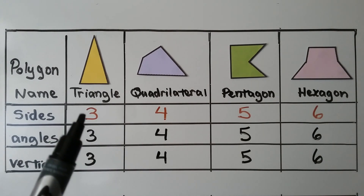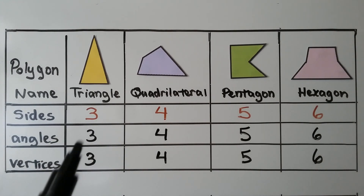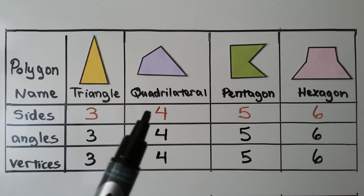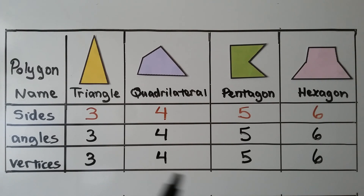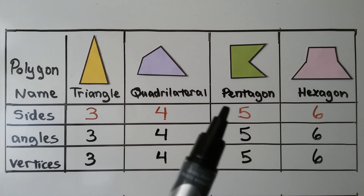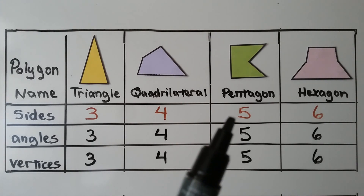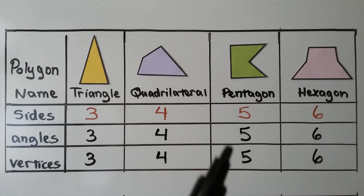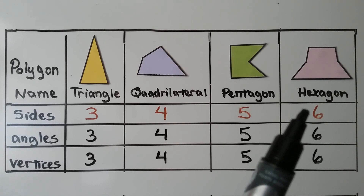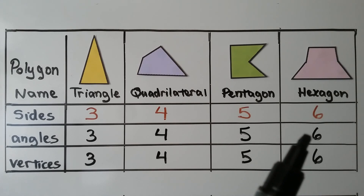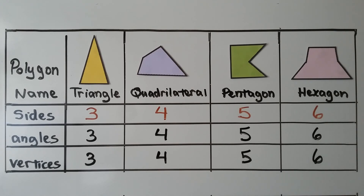A triangle has three sides, three angles, and three vertices. A quadrilateral has four sides, four angles, and four vertices. A pentagon has five sides, five angles, and five vertices. And a hexagon has six sides, six angles, and six vertices.